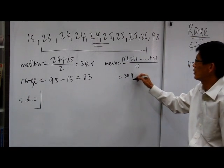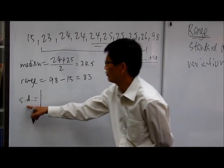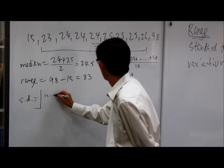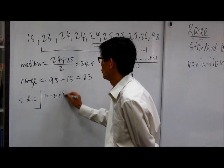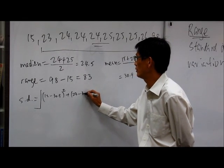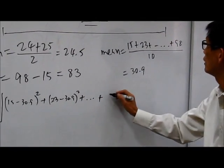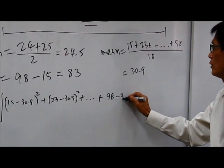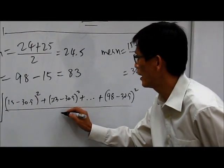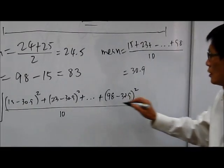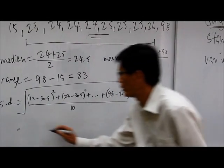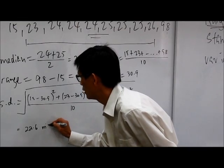And we know that the standard deviation is calculated by taking each of these numbers, subtracting the mean, we square it to remove the negative, and you do the same for the rest of the numbers. Then 23 minus 30.9, square it to remove negative, until finally we have 98 minus 30.9 and we square this as well. You take the average of all these 10 numbers and you square root it. So that the final value I've pre-calculated is 22.6 minutes.